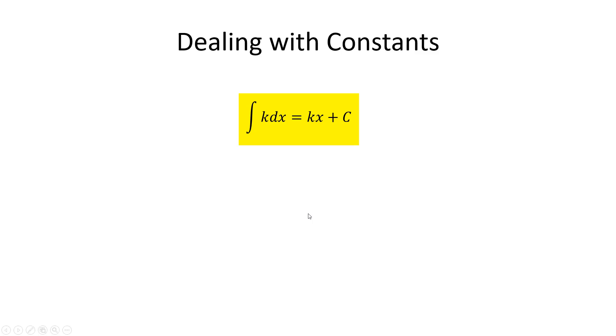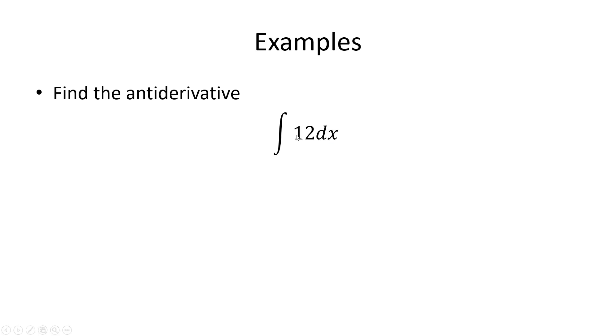All right, what if we have a constant? So in other words, what if I want to know the antiderivative of 3, just a number? Well, think about it. This is the derivative of some function. Wouldn't that function be 3x because the derivative of 3x is 3? Aha! All right, so all you're doing is just putting the actual variable on it. So find the antiderivative of 12 dx. Got your answer? Yeah, buddy. 12x plus C.